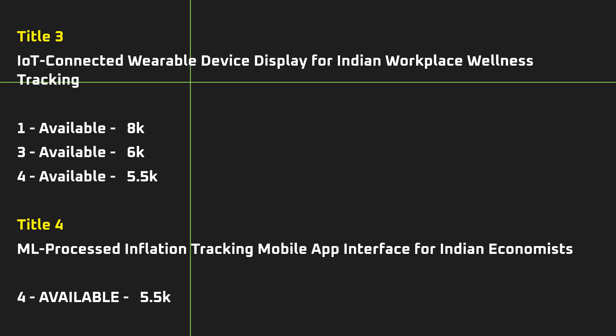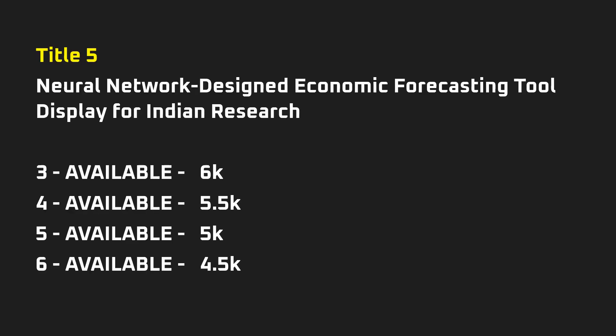Title 5: Neural network designed economic forecasting tools display for Indian research — portions number three, four, five, and six are available for 6K, 5.5K, 5K, and 4.5K respectively.